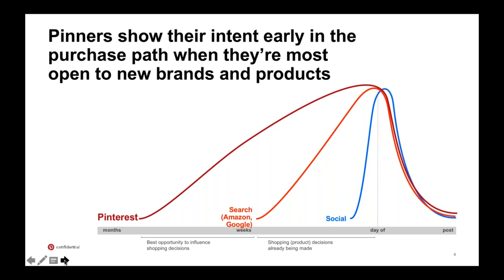The first thing about Pinterest is to understand how pinners use Pinterest. We have what we call casual intent — 98% of our search queries on Pinterest are unbranded. For example, you go to Google because you know you want Nike red shoes size 9. You come to Pinterest because you have no idea how to dress yourself and you ask: what are some cool men's fashion trends that I should be aware of?